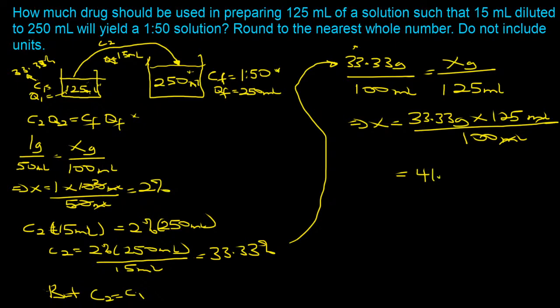We get 41.66, but the question says to round to the nearest whole number. So the answer is 42. No units are included, as specified.